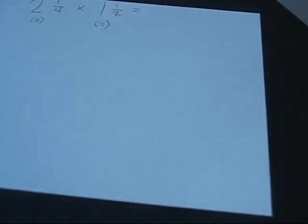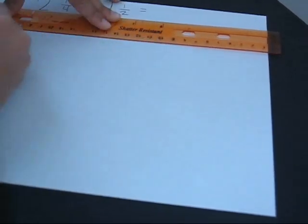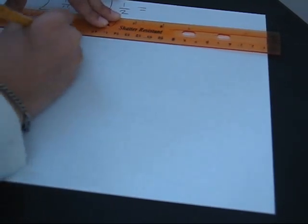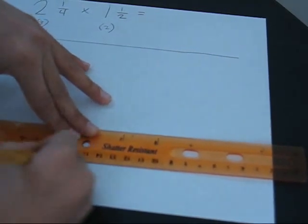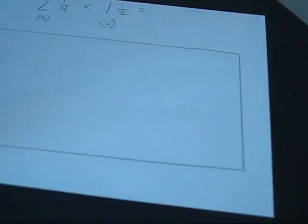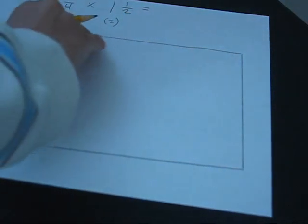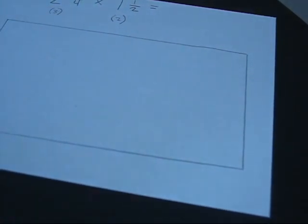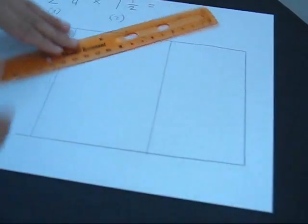Now we're going to get our ruler, which is optional, and then we're going to draw the rectangle. We're not going to take the whole space — just what is reasonable. We're going to have the 2 and 1 fourth across this line, because 2 and 1 fourth is bigger than 1 and 1 half. So let's make the 3 sections, and then the 2 sections for 1 and 1 half.